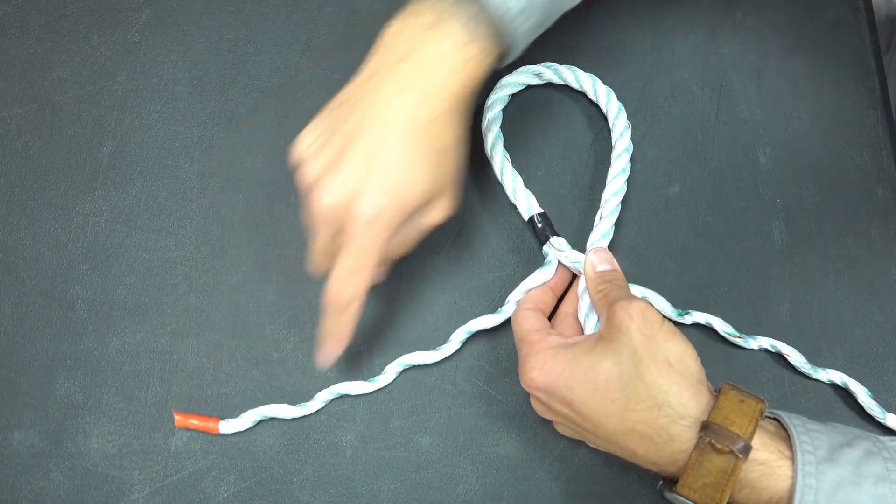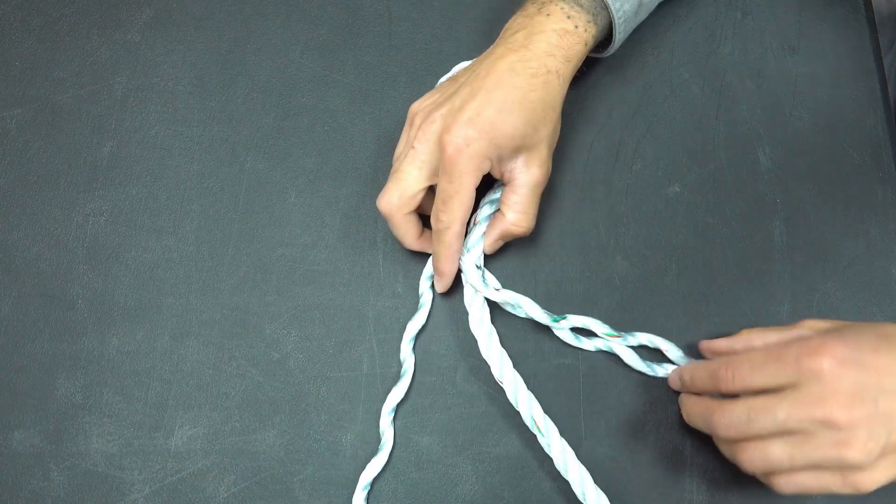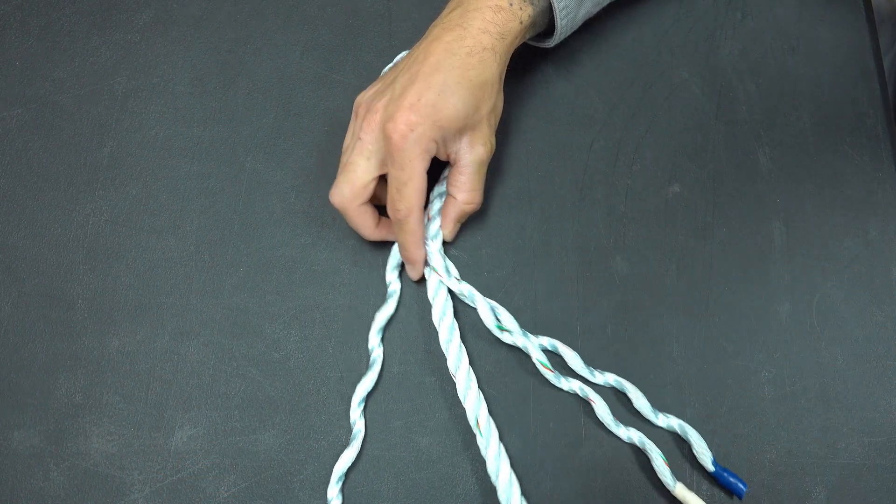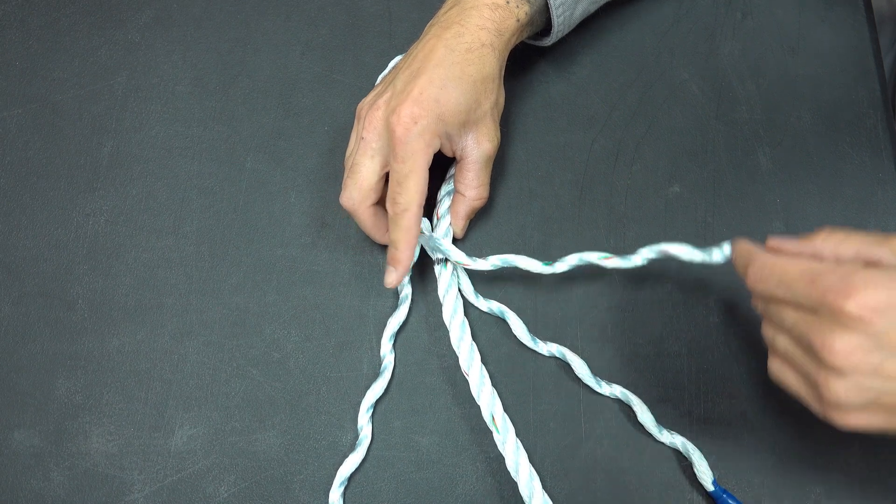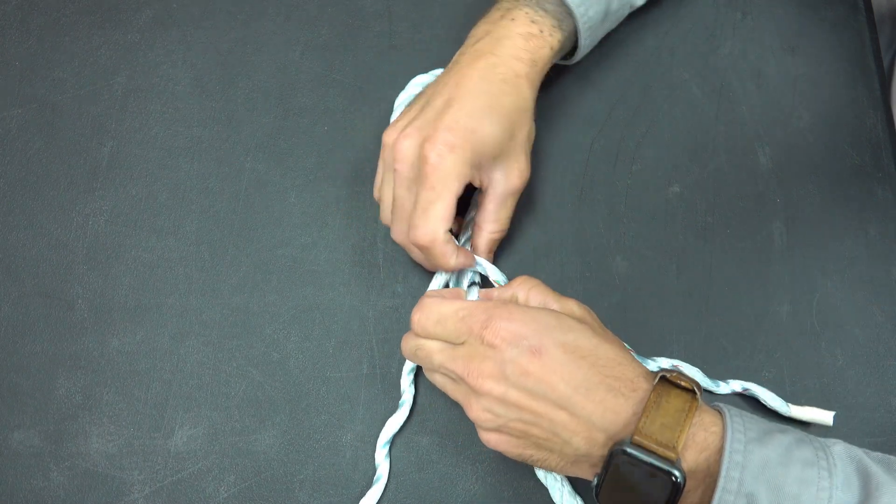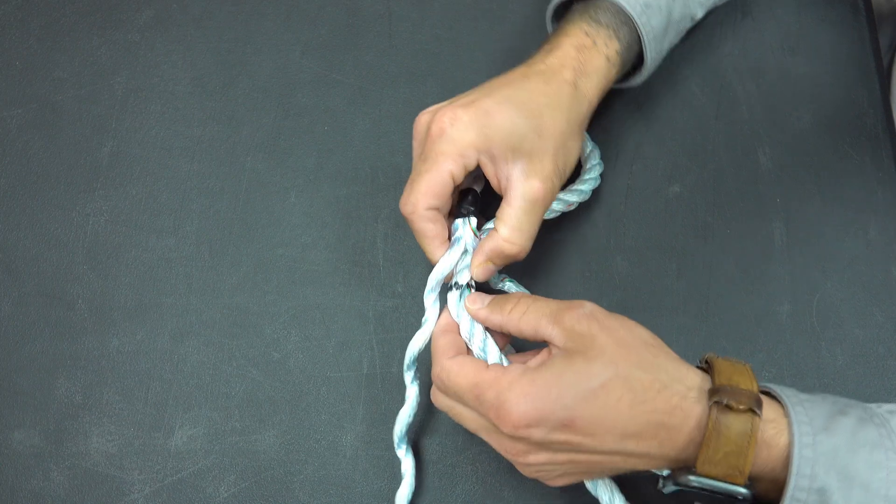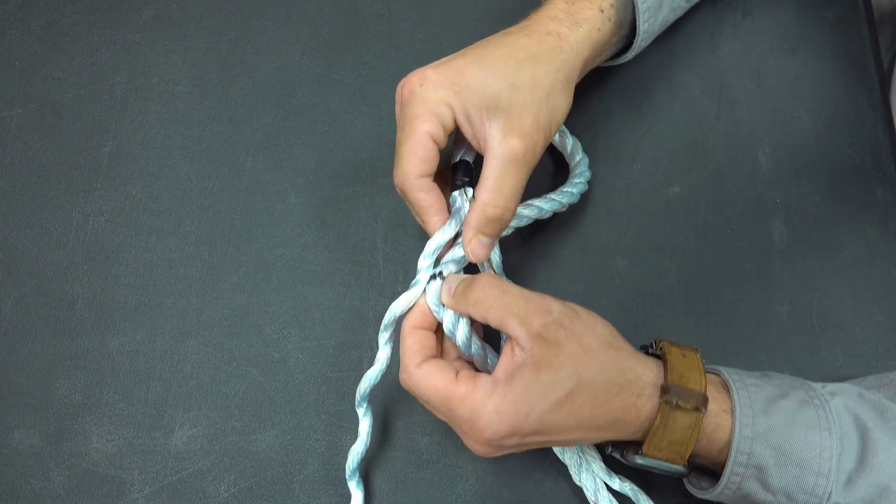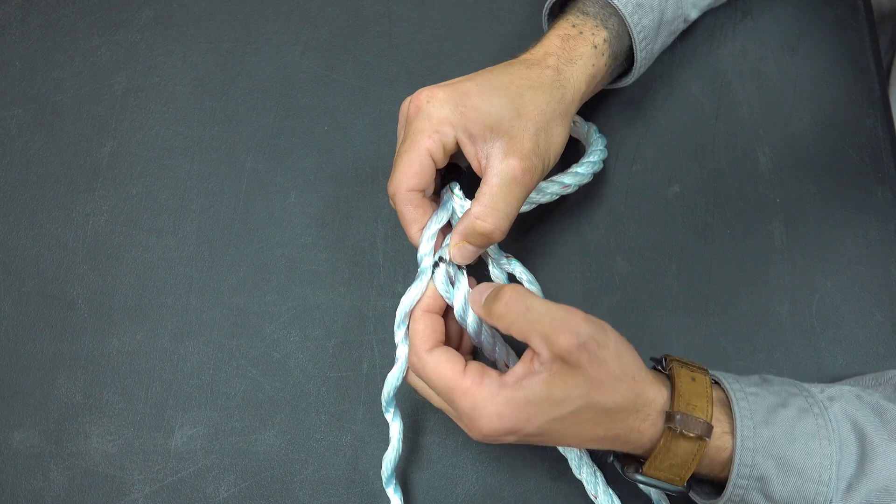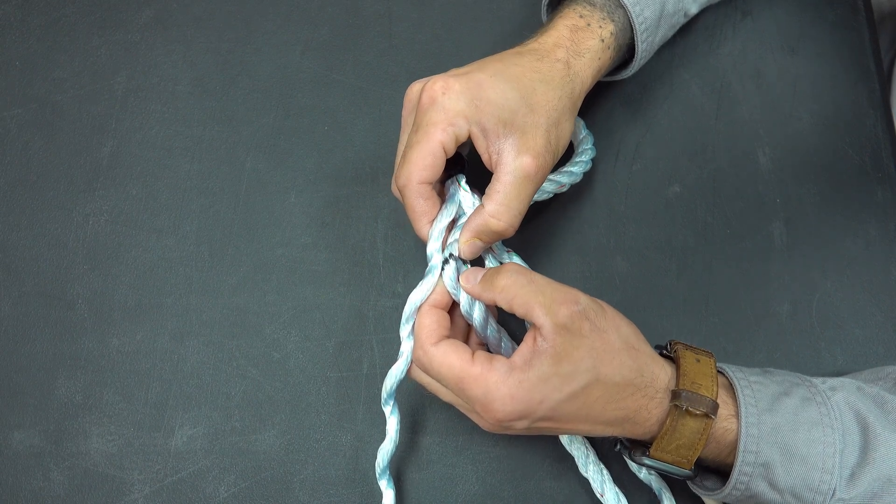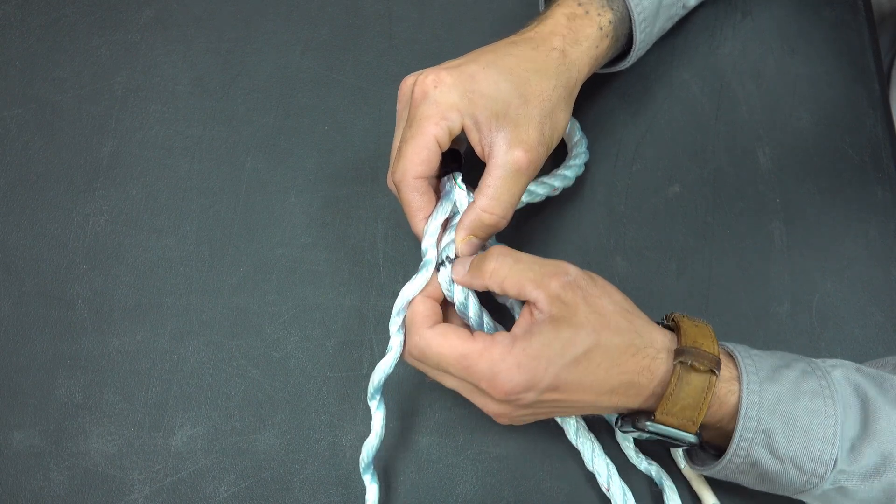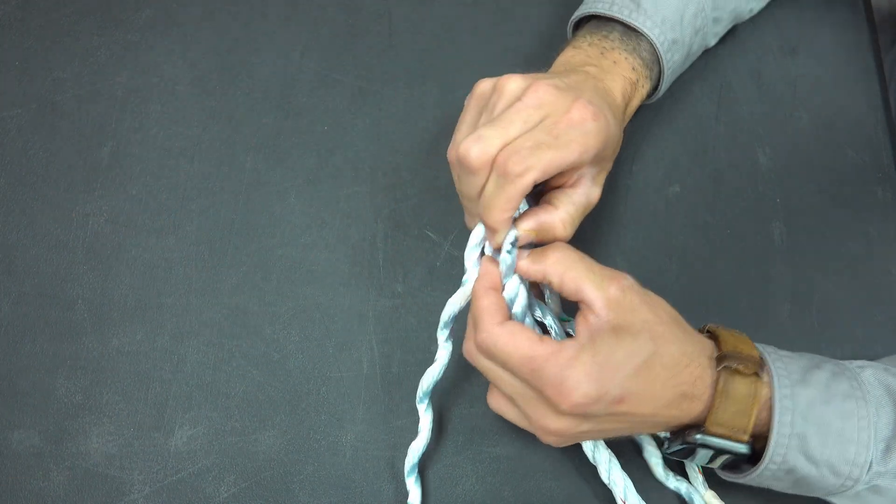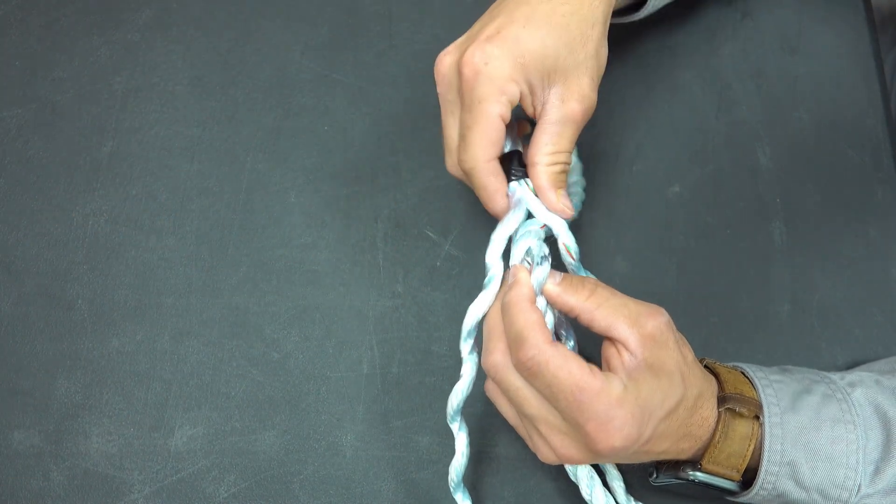This one is John Wayne right here. John Wayne has each one of his legs sitting on the side of his horse. Now here is where we are going to make our first tuck. We're going to separate any strand, it doesn't matter which one, just pick a strand. And we are going to tuck the red one directly through the strand at our Sharpie mark.